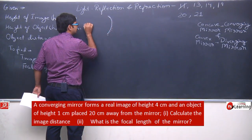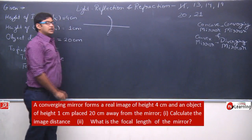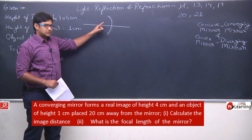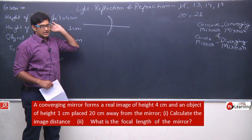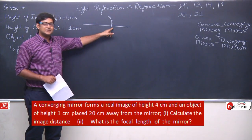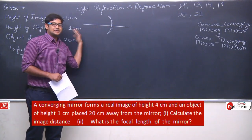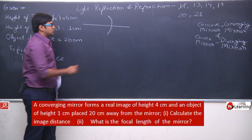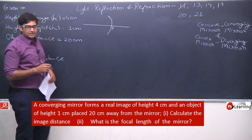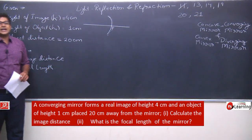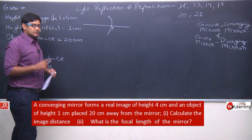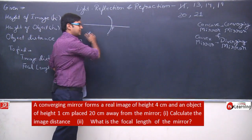This is a concave mirror. We are told that the image is real. If the image is real, it means the image forms on the left side of the pole — in the direction of the pole along the principal axis. So the sign convention for image distance will be negative. Virtual images form on the positive side; real images form on the negative side.